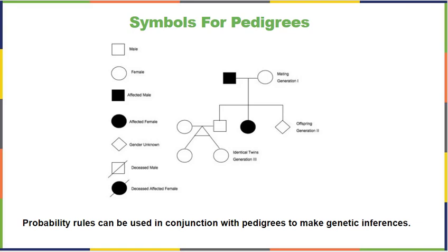If you hear a light grumble in the background, it is my dog who is letting me know that there is a cat in our yard. So pedigrees — let's look at symbols for pedigrees. They are family trees that are written in such a way that you can see genetic information on them.